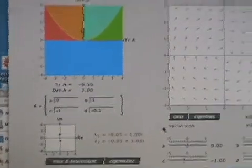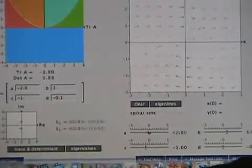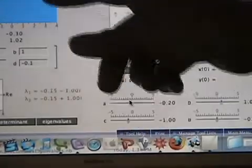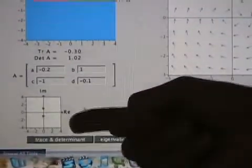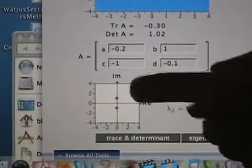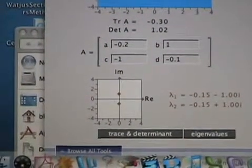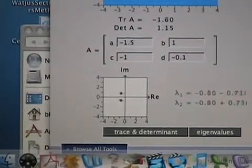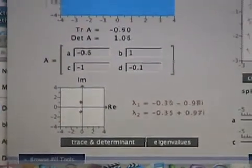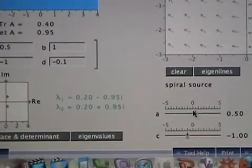That's one thing. You can also go to linear phase portraits and take a more active role in how all this changes. You can change the parameters with the sliders. You can see the vector field up here. You can see the trace determinant plane here. You can see a plane, the complex plane, with the real axis as horizontal and the imaginary axis as vertical, showing the eigenvalues as you change the parameters. So there's lots of neat things that you can see and try to help you understand what's going on.